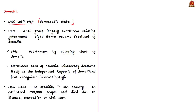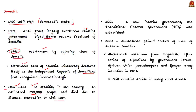In the year 1969, a small group illegally overthrew the existing government, making Siad Barre the president of Somalia. He was overthrown by opposing clans in 1991. After this, the northwest part of Somalia unilaterally declared itself as the independent Republic of Somaliland. However, clan conflict erupted and there was no stability in the country, so by 1992 an estimated 350,000 Somali people had died due to disease, starvation, or civil war.